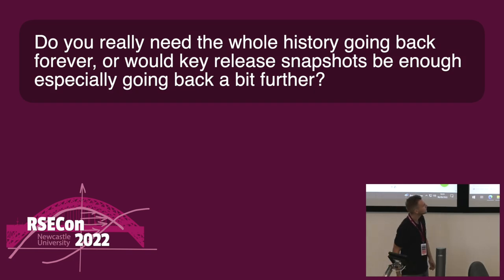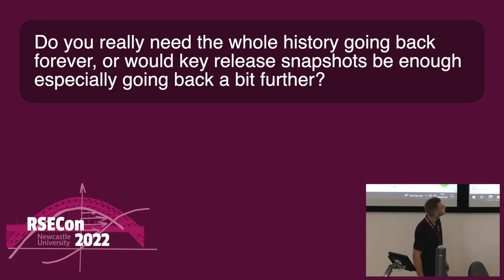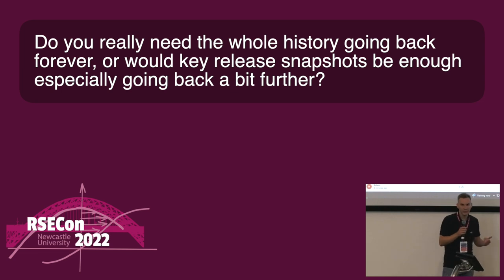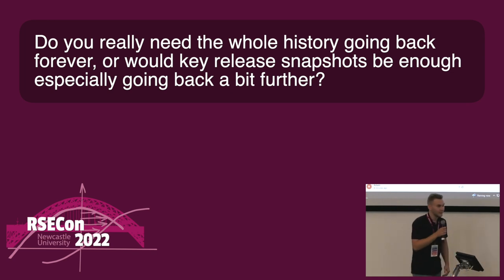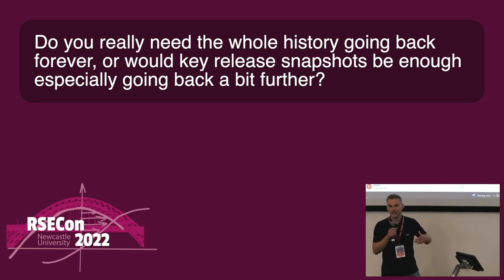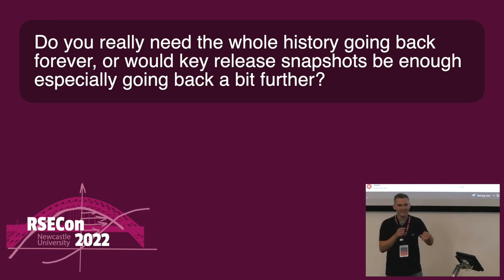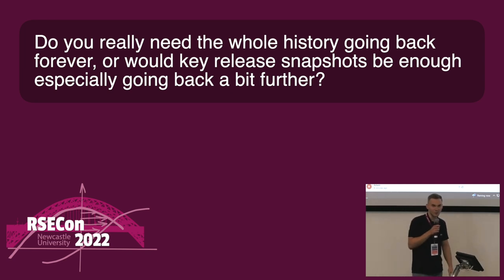Question: Do you really need the whole history going back forever, or would key release snapshots be enough? We experimented with using just part of the history, but the problem is we have many open feature branches. If you have lots of branches that date back a long time, you'd have to find a point where none of those branches existed to make a clean cut, and that's more difficult than just migrating the full history.